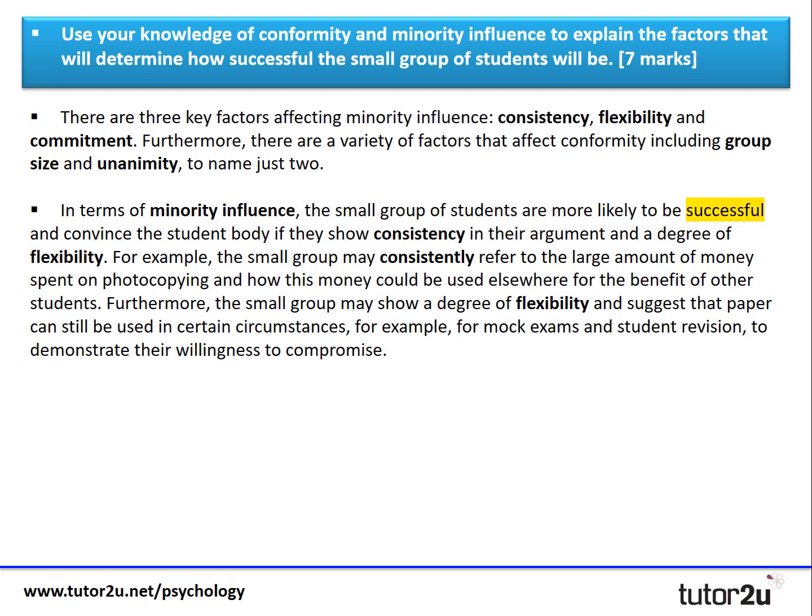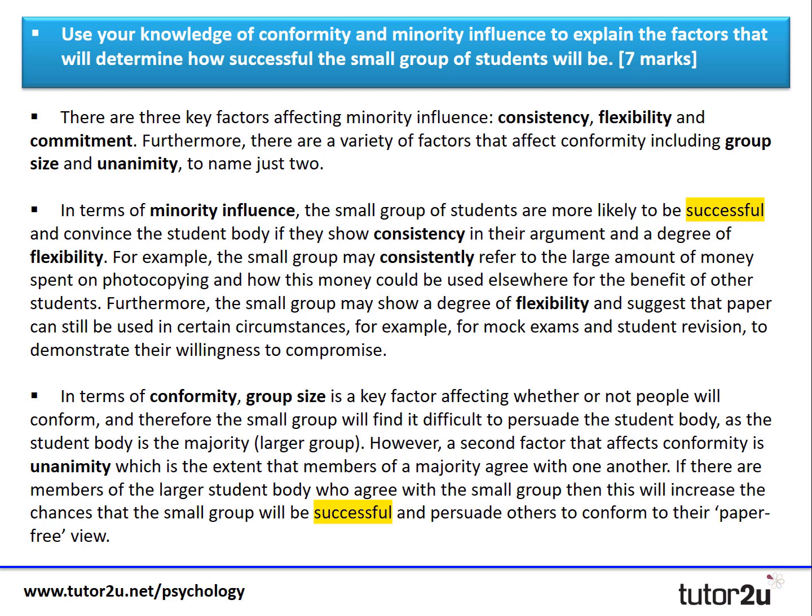In terms of conformity, group size is a key factor affecting whether or not people will conform. Therefore, a small group will find it difficult to persuade the student body, as the student body is the majority. However, a second factor that affects conformity is unanimity — the extent to which members of the majority agree with one another. If there are members of the larger student body who agree with the small group, then this will increase the chances that the small group will be successful and persuade others to conform to their paper-free views.